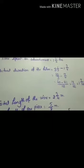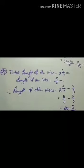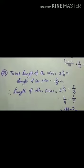Okay. Now, the last question is 29. A piece of wire 2 and 3 by 4 meter long broke into 2 pieces.